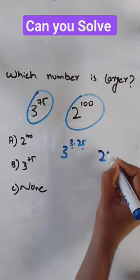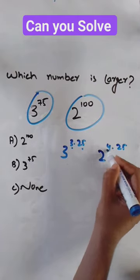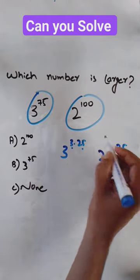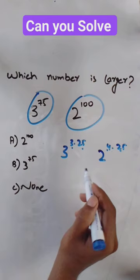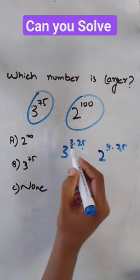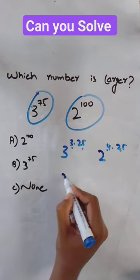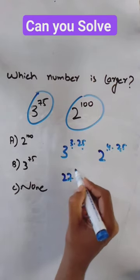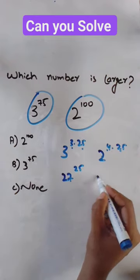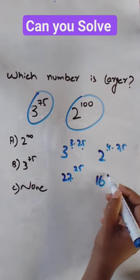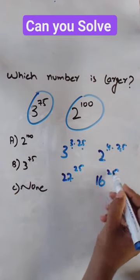And 4 multiplied by 25 — 4 multiplied by 25 is equal to 100. So we get 3 power 3 is equal to 27, giving us 27 power 25. And 2 power 4 is equal to 16, giving us 16 power 25.